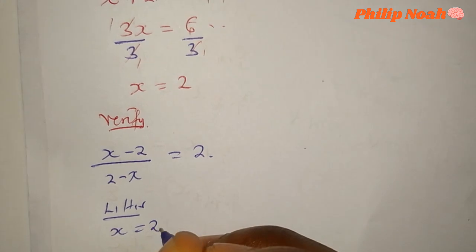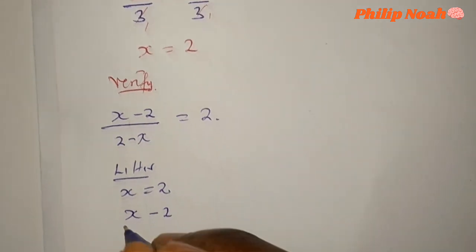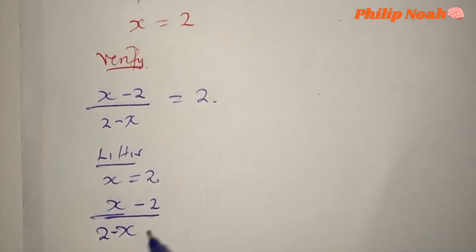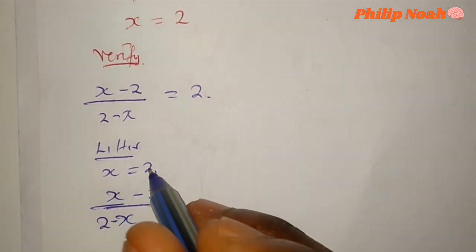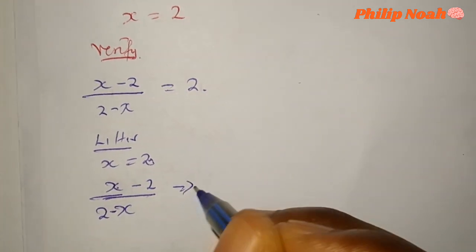Our x equals 2. So let's see, x minus 2 over 2 minus x. Let's take this 2 and put it here. It becomes 2 minus 2 over 2 minus 2.